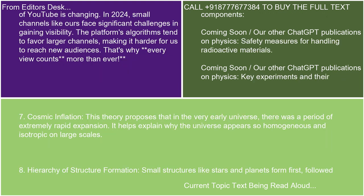7. Cosmic Inflation: This theory proposes that in the very early universe, there was a period of extremely rapid expansion. It helps explain why the universe appears so homogeneous and isotropic on large scales.